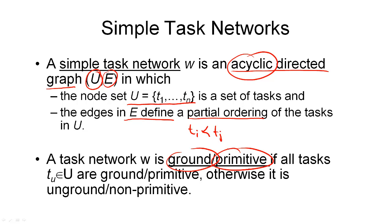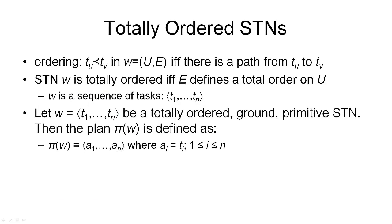If only one task in the network is unground, then we consider the whole network unground. And if only one task in the network is non-primitive, then we will say that the whole network is non-primitive. Apart from being ground and/or primitive, a task network can also be totally ordered or partially ordered.